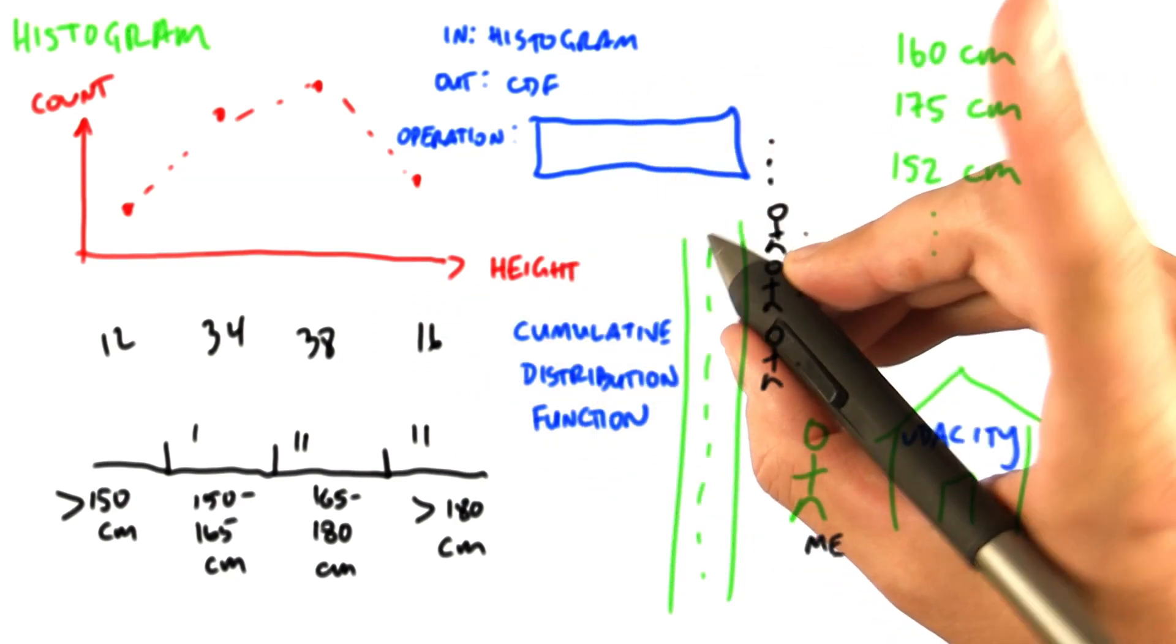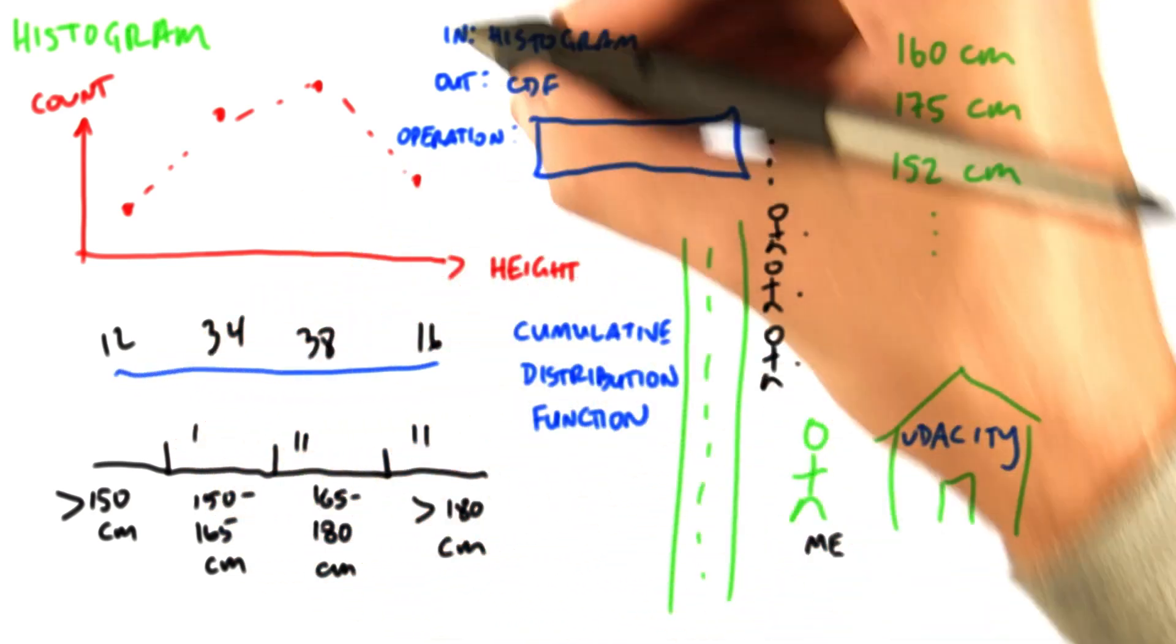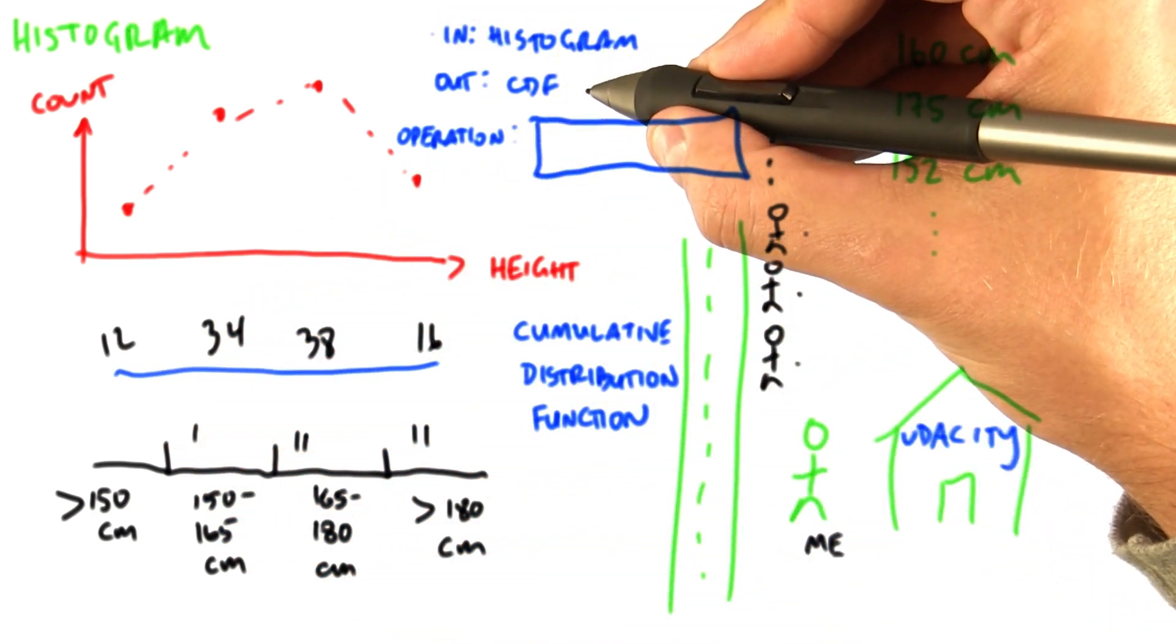In one word, or two words to be a little more precise, what is the operation we need to do to this input to get the cumulative distribution function?